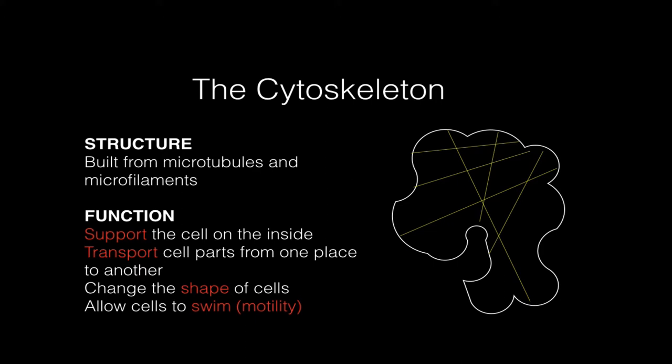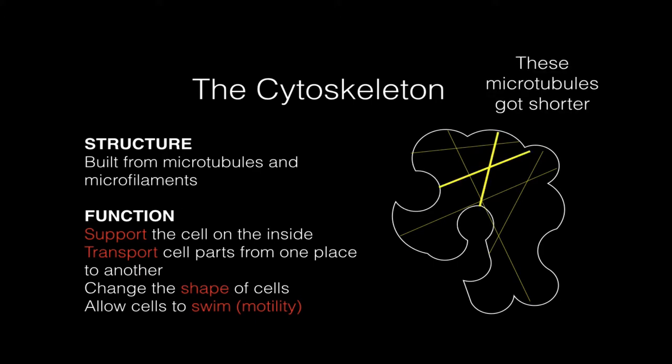Another way of thinking of the cytoskeleton is like the cables inside of a tent. If you lengthen or shorten the cables — and the cables are attached to the inside of the cell membrane — you can change the shape of the cell. If I click through this, you'll see how if we shorten some microtubules, we can pull in on the cytoplasm and cause the cell to change its shape.